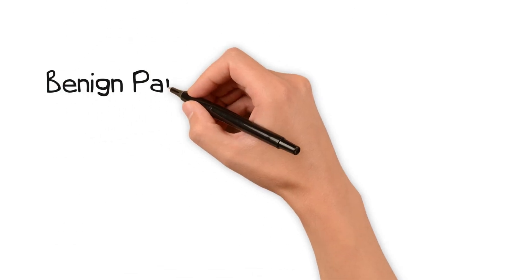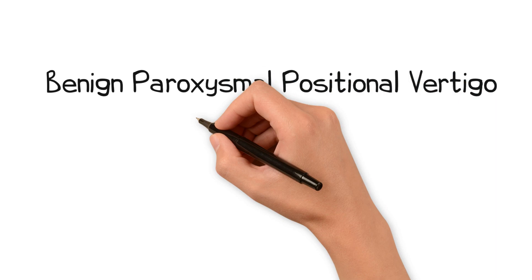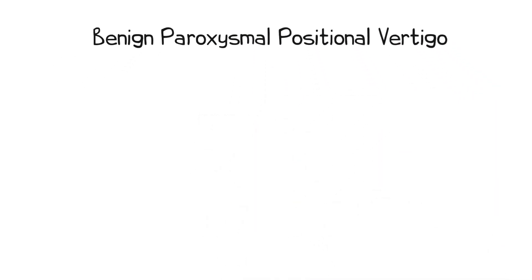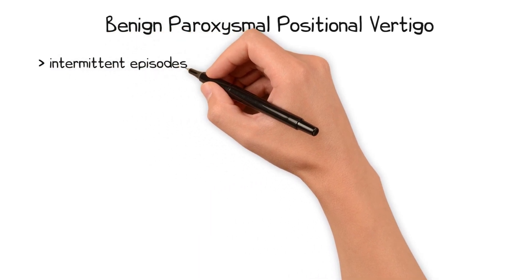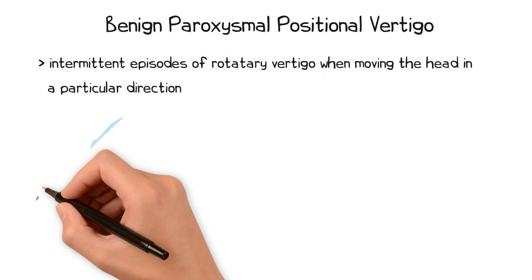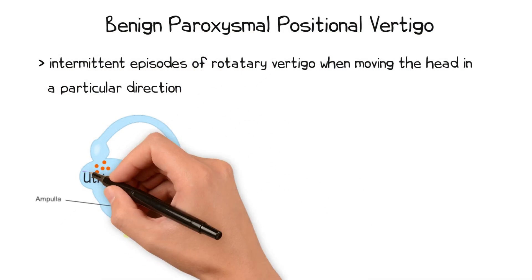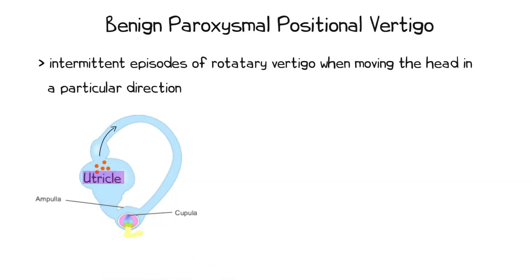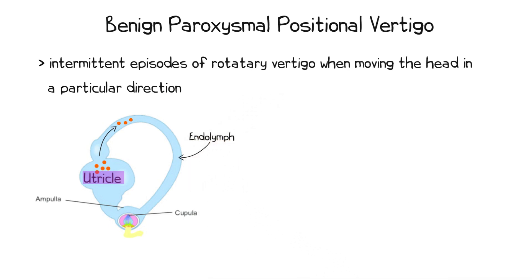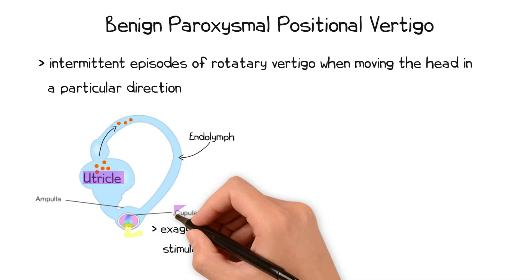Benign paroxysmal positional vertigo is the commonest cause of peripheral vertigo. This is a condition whereby a patient experiences intermittent episodes of rotatory vertigo when moving the head in a particular direction. This occurs due to displacement of otoliths from the utricle into a semicircular canal. As the canals usually only contain endolymph, the presence of otoliths causes an abnormally turbulent movement through the canal and thus an exaggerated stimulation of the copula.